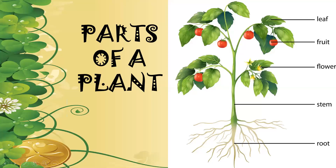We'll study the parts of plants now, as you can see in the diagram. We have two parts of a plant: one is the root system and one is the shoot system. The part of the plant which is below the surface of the earth is known as the root system, which consists only of the roots. The part of the plant grown above the surface of the earth is known as the shoot system.